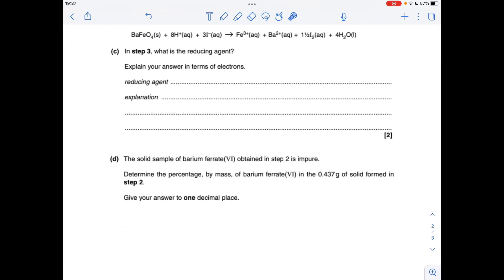Moving on to part C now, we've got to identify the reducing agent in step 3. There's the equation for step 3. And we've got to explain it in terms of electrons. A quick way to identify a reducing agent in a redox reaction is just look for something that's been oxidized. In this reaction, the I⁻ ions have actually been oxidized because their oxidation number's gone from -1 up to 0. The way they've done that is they've donated electrons to bring about that change in oxidation number. That is the definition of a reducing agent, an electron donor.